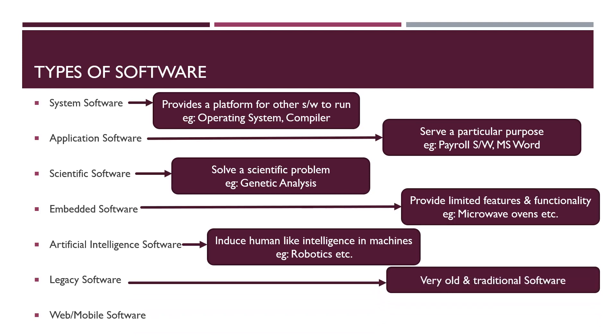Next one is legacy software. Legacy software are completely different from other softwares. These softwares have been changed from time to time so that we can get the desired functionality and quality. Next one is web or mobile software. Web software are executed by web browser and mobile software are executed by mobile devices.